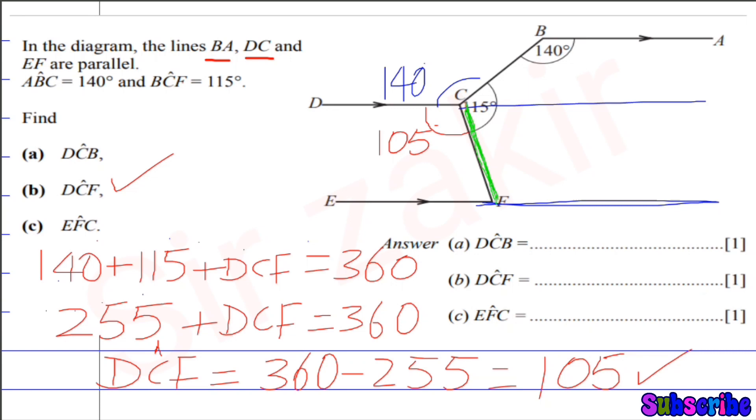So alternate angles so formed are equal. So this angle 105 is alternate angle to this angle F. So angle F is also of 105 degrees.